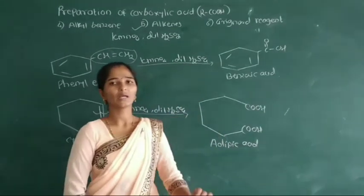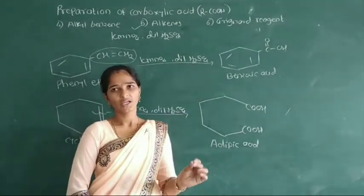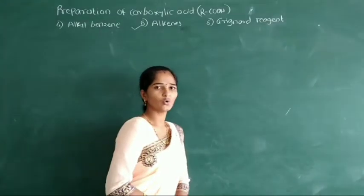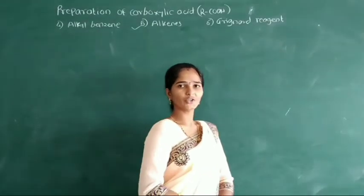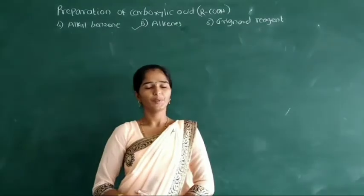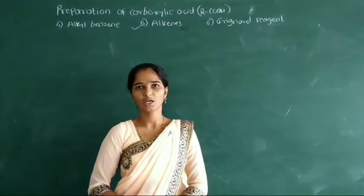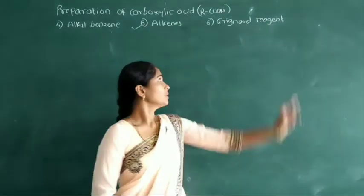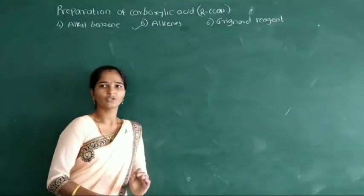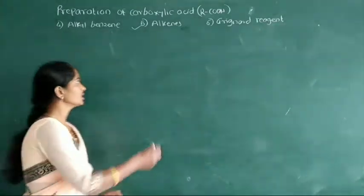This is another oxidation reaction for preparation of carboxylic acid by using an oxidizing agent. After these oxidation reaction methods, we will study preparation of carboxylic acid from Grignard reagent. We know the functional group of this Grignard reagent.